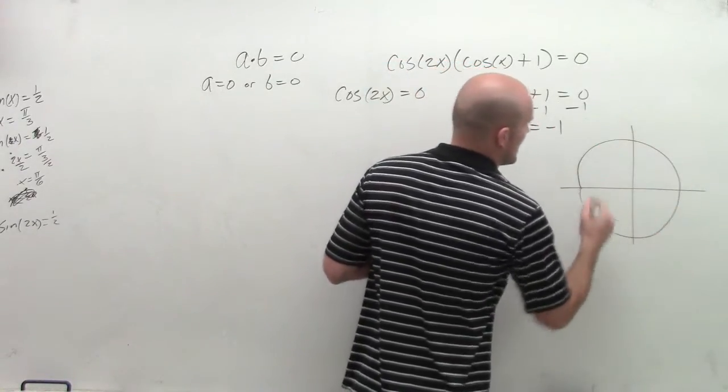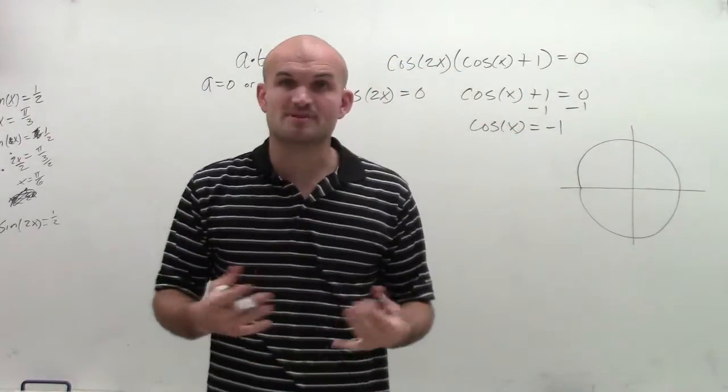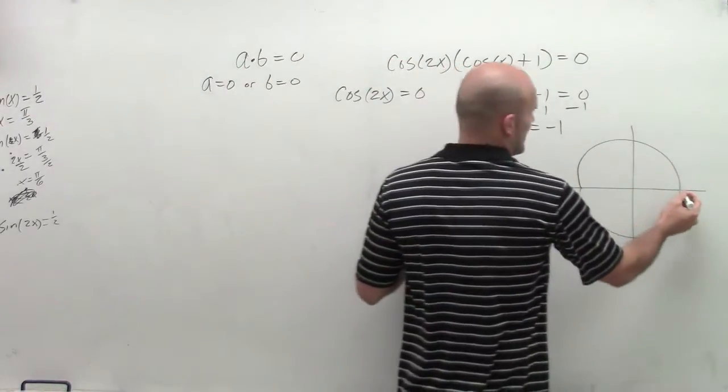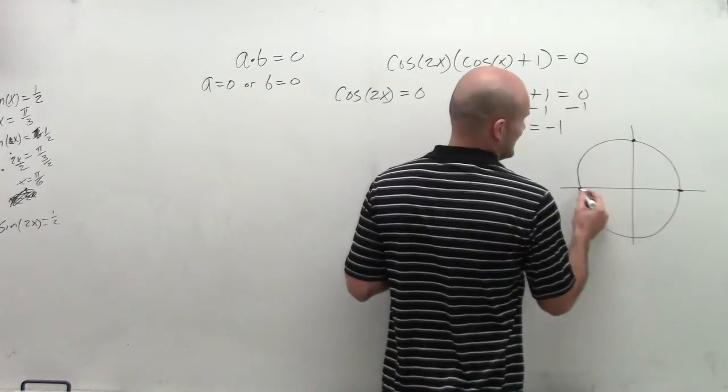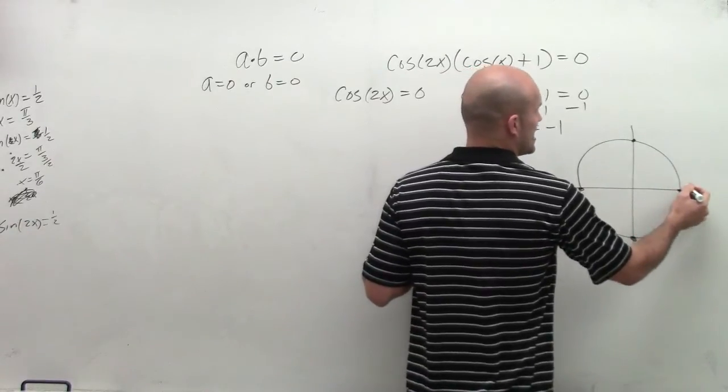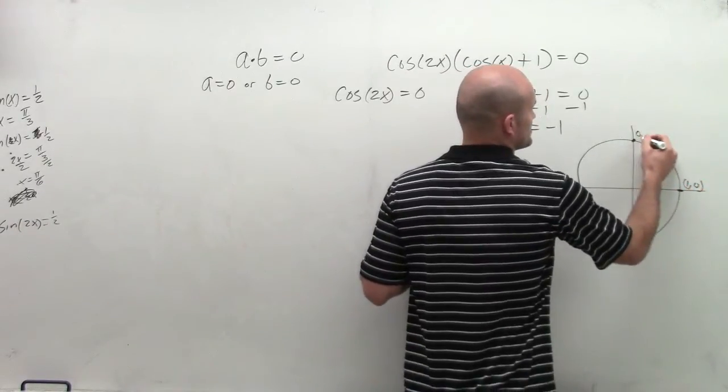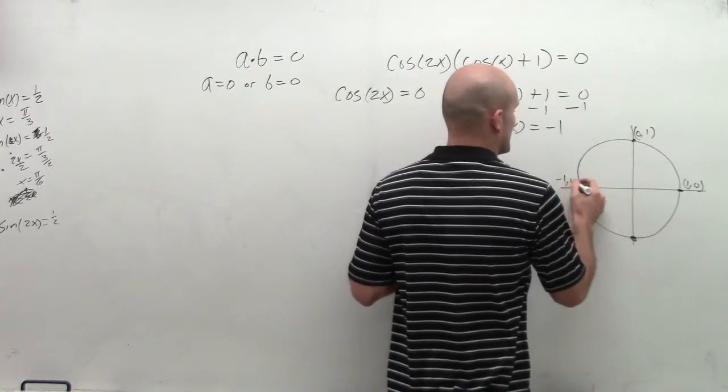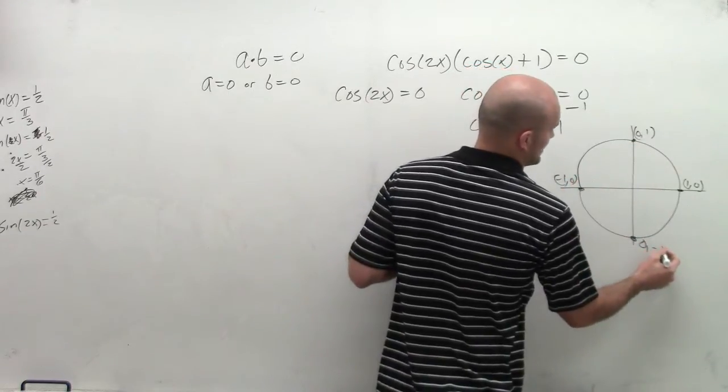OK, so we go and drop our unit circle. And remember the cosine represents your x coordinate, right? So we have four main intercepts on our unit circle. We have 1, 0, 0, 1, negative 1, 0, and 0, negative 1.